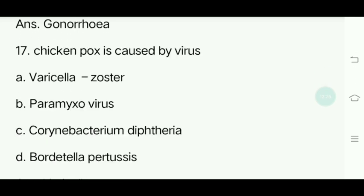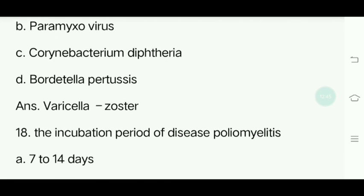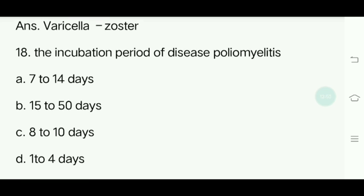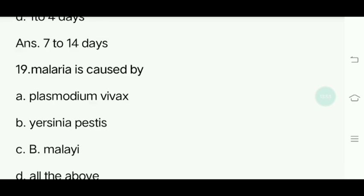Seventeenth question. Chickenpox is caused by which virus? Options: Varicella-Zoster, Paramyxovirus, Corynebacterium diphtheriae, Bordetella pertussis. Answer is Varicella-Zoster. Eighteenth question. The incubation period of poliomyelitis is? Options: 7 to 14 days, 15 to 50 days, 8 to 10 days, 1 to 4 days. Answer is 7 to 14 days. Nineteenth question. Malaria is caused by? Options: Plasmodium vivax, Yersinia pestis, B. malai, All of the above. Answer is Plasmodium vivax.